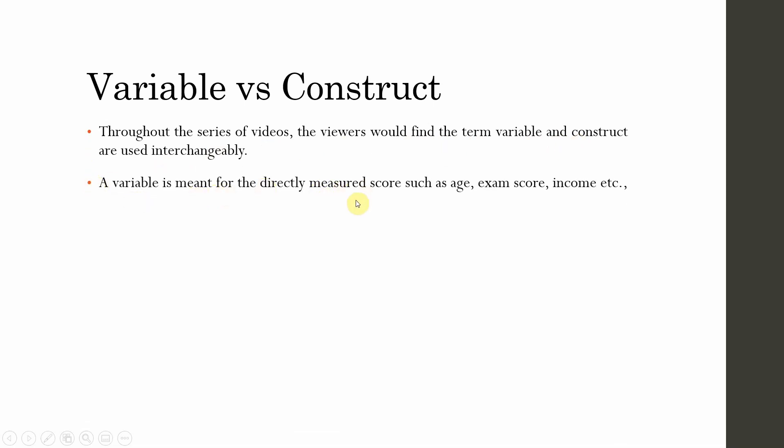A variable is meant for directly measured scores such as age, exam score, height, income, variables such as that.